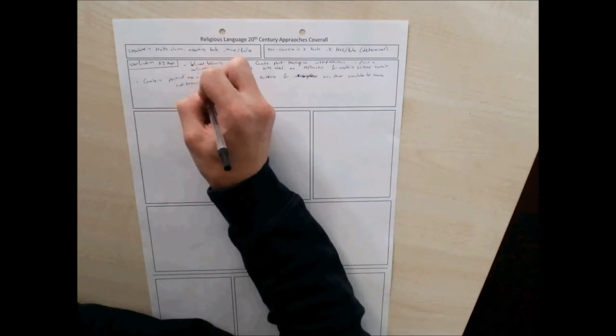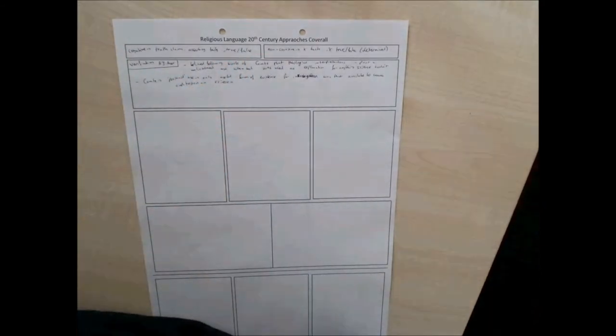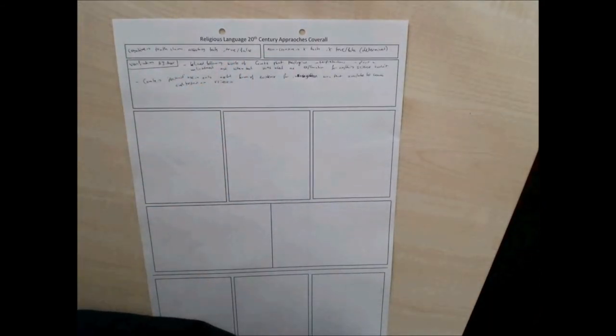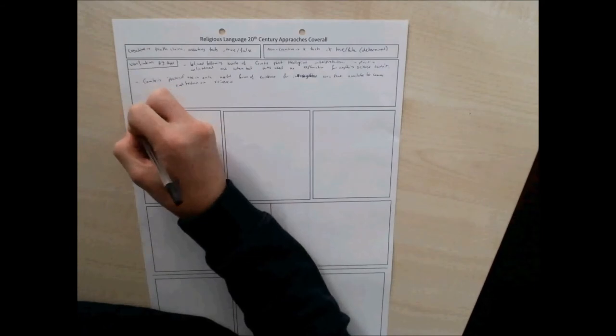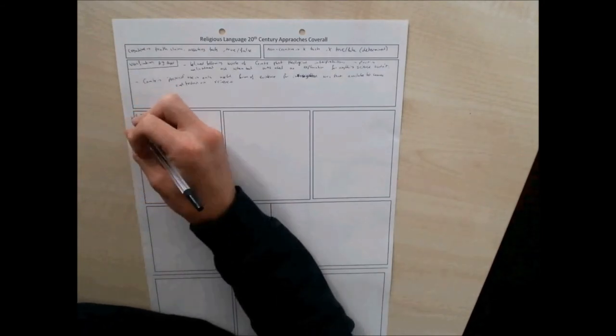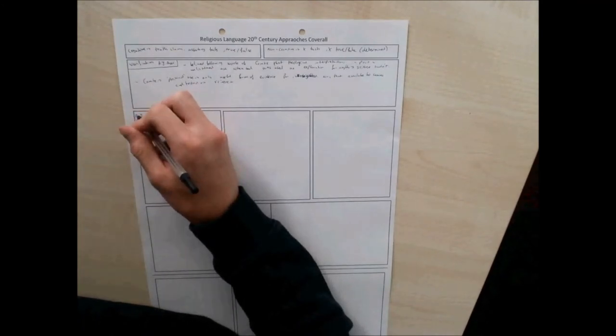The first box underneath is for Ayer. Ayer is the name you need to know. Ayer is your emotivism guy from metaethics as well. It's the same man. Ayer in 1936 wrote Language, Truth, and Logic at the age of 26. It's a real snore. I do have it if you wish to borrow it but I don't recommend it.